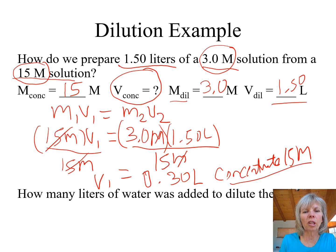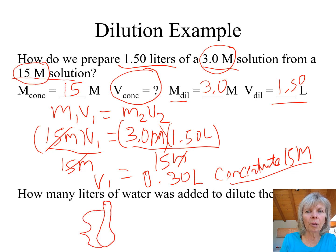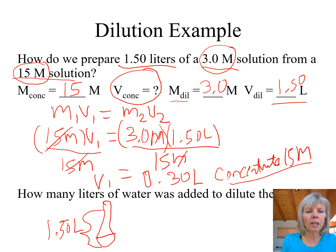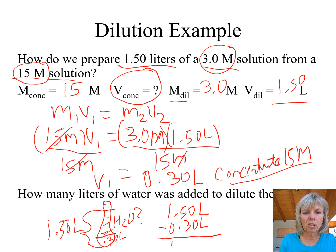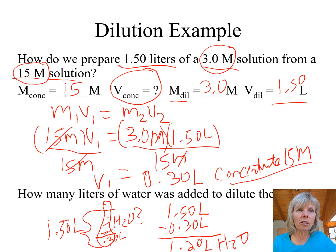The next question asks how much water was added to dilute the solution. We can imagine a flask with a total volume of 1.5 liters. We're adding in 0.30 liters of concentrated solution and want to find the water portion. Just like in the previous example, we subtract: 1.5 liters total minus 0.3 liters of concentrated solution equals 1.20 liters of water that was added.